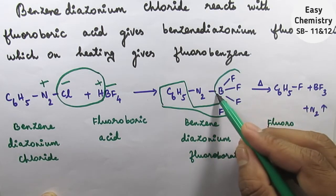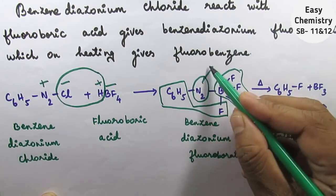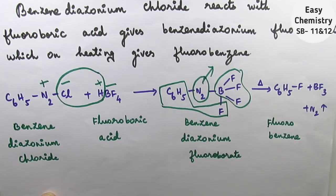We get BF3 plus N2 at neutral level. We will get fluorobenzene.